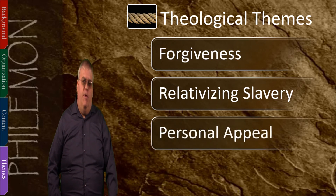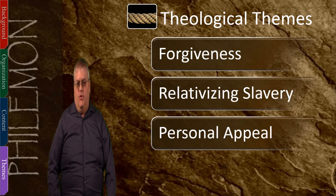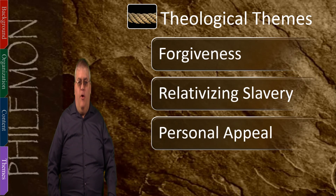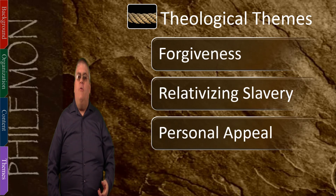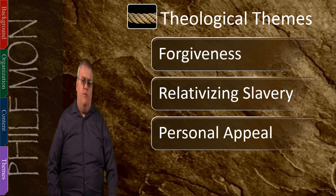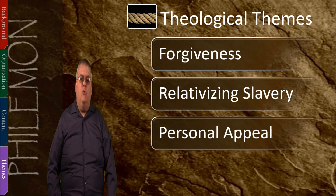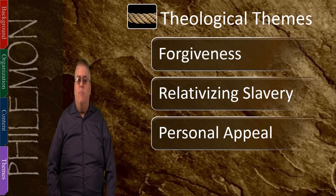The last theme is personal appeal. In this letter, Paul easily could have pulled rank and commanded Philemon to do what was right, but he chose a different way. He emphasized how much they shared together, called Philemon his partner in ministry, and referred to both Philemon and Onesimus as brothers. Paul mentioned the word 'heart' three times in this letter — once that Onesimus was his very heart, and twice mentioning how Philemon refreshed people's hearts, including Paul's, with his activity. Paul wanted Philemon to voluntarily do what he ought to do because it was right and from his heart, not because he was forced to do it.